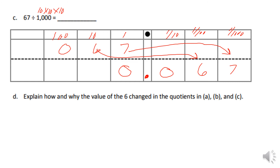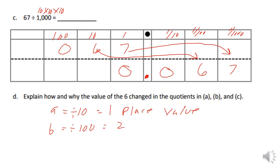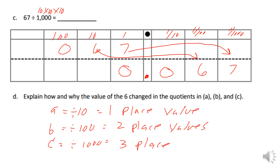To explain how the value of 6 changed in A, B, and C: A was divided by 10, which equals one place value of movement. B was divided by 100, which equals two place values. C was divided by 1000, which equals three place values of movement.